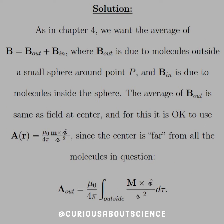The solution, as in chapter 4, is we want the average of the field: B_out plus B_in, where B_out is due to molecules outside a small sphere around point P, and B_in is due to the molecules inside the sphere. The average B_out is the same as the field at the center, and for this it is okay to use the potential mu_naught over 4pi times M cross script-R-hat over script-R squared, since the center is far from all the molecules in question.